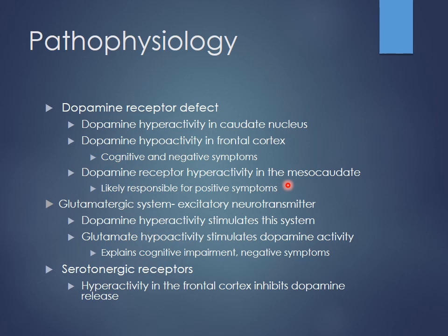There are probably different sources for different symptoms, and drugs work differently based on the underlying issue. Glutamate is also important — glutamate hypoactivity can actually stimulate some dopamine activity, which can exacerbate some of these issues and may be causing some cognitive and negative symptoms. Serotonin is going to be big as well, because what's the primary difference between first-generation and second-generation antipsychotics?